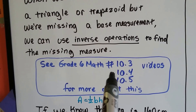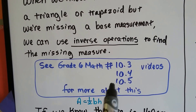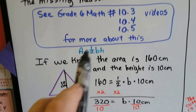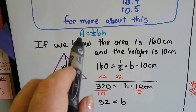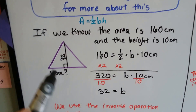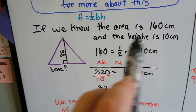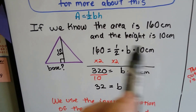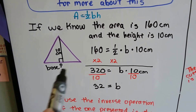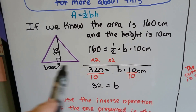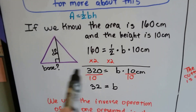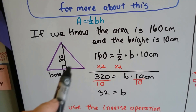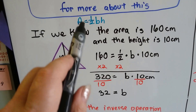You might want to go back a couple of chapters to learn more about inverse operations, even if you just watch a few minutes of each video. Here is the formula for the area of a triangle — area equals half base times height. If we know the area is 160 centimeters for the whole thing, and we know the height is 10 centimeters, we just need to find the base. We can use the formula to help us. We plug the information we know into the formula.